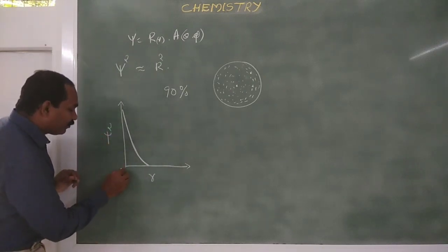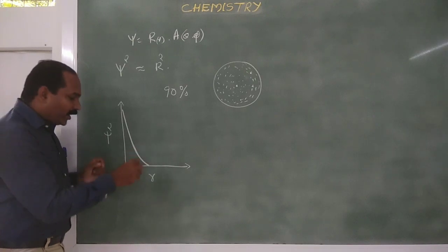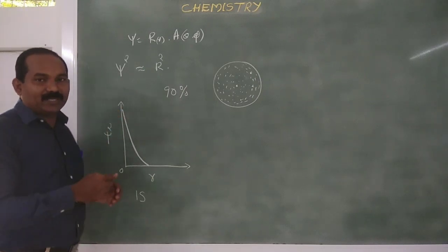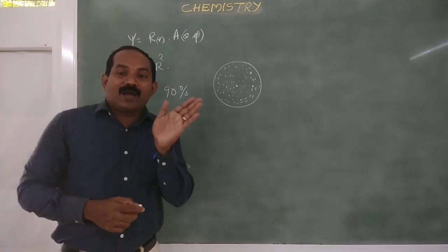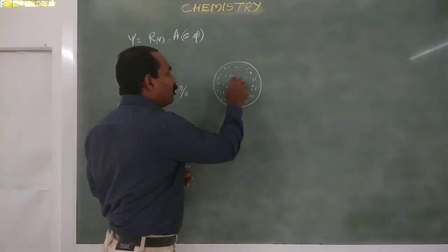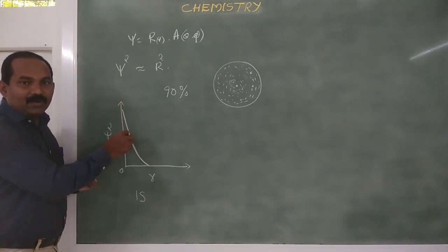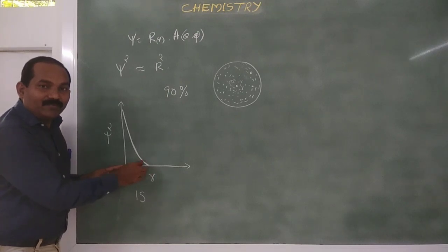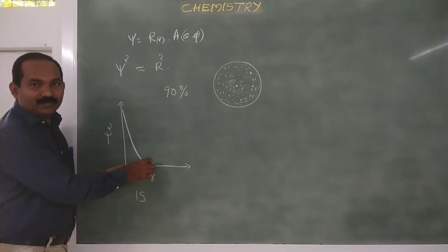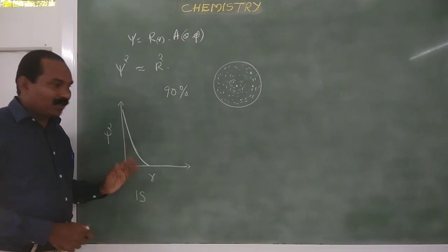The origin of this plot means the nucleus. For the 1s orbital, this is the psi square versus r diagram. For 1s orbital, the probability of finding the electron is maximum at the nucleus. The probability density is highest at the nucleus, and it decreases when we move away from the nucleus, reaching a minimum of zero.